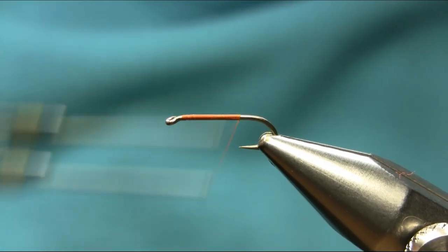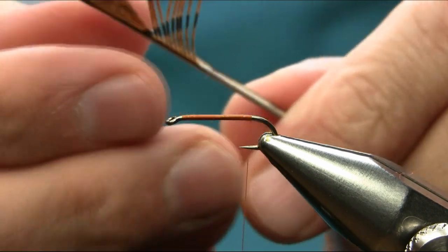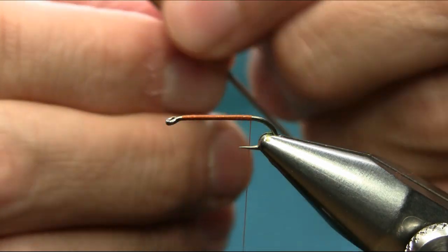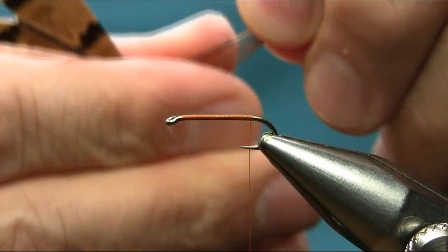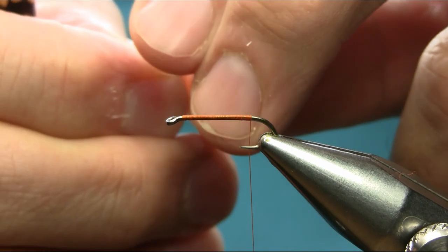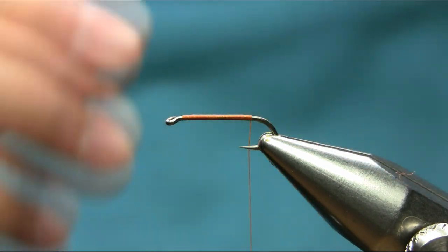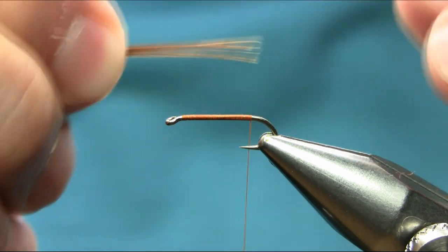And the tail I'm using is pheasant tail. If you level these tips for the tail, use about seven, eight, five. If you want to use less it's entirely up to you.